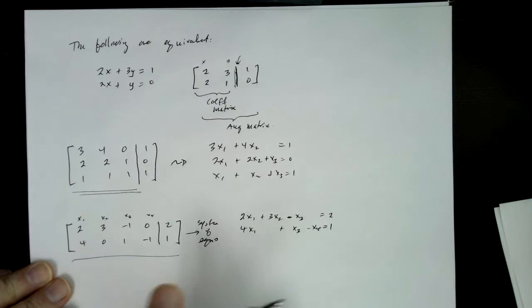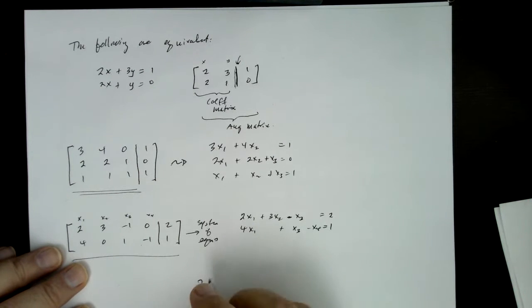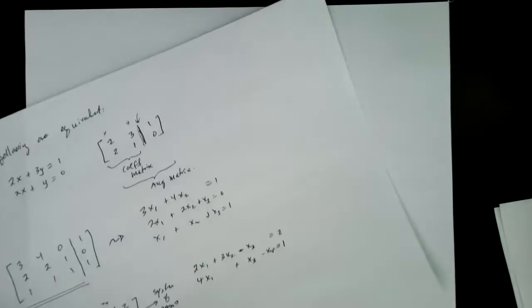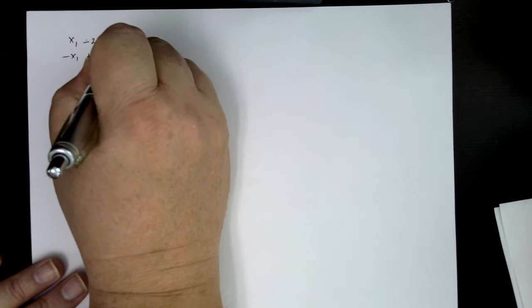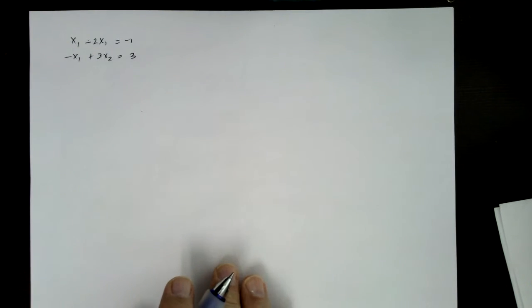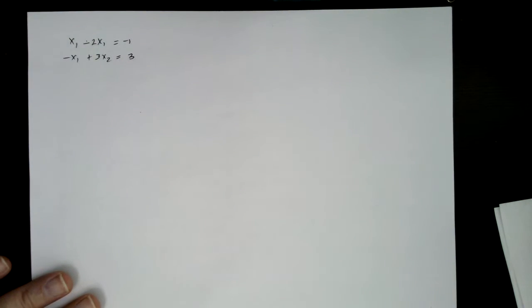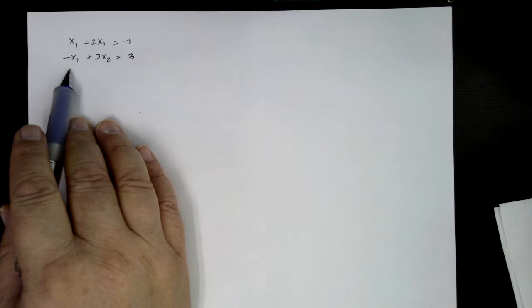So again, we're going to use the matrix notation, and our next goal here is to look at elementary row operations. Okay, so what are those? Well, the idea here is that, for example, if I have the system x1 minus 2x2 equals minus 1, minus x1 plus 3x2 equals 3, if I have that system, I'd like to somehow manipulate this system into one that's maybe a little bit easier to use. And so one way to do that is to do elimination, right, from algebra.